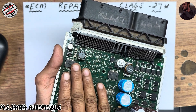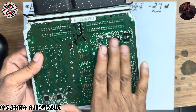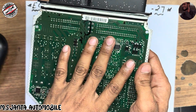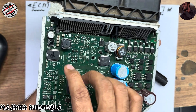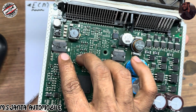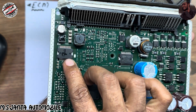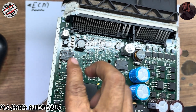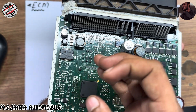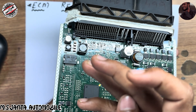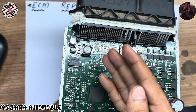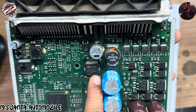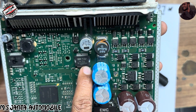In Bosch ECM, this IC is a power IC — L9147. This is the power IC, meaning it supplies voltage at 1.5V, 2.5V, 3.5V, and 5V, including reference voltage, for working the ECM.